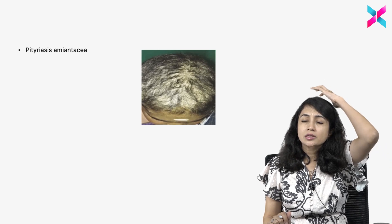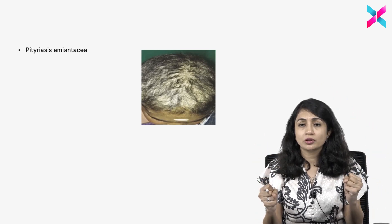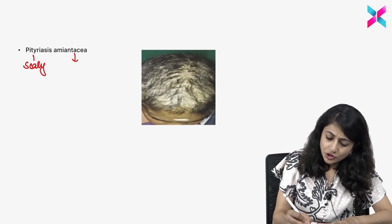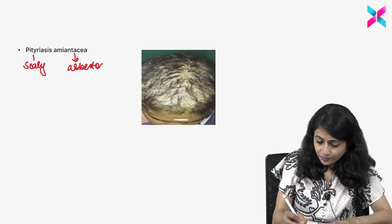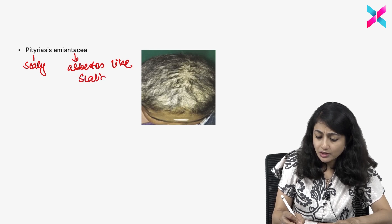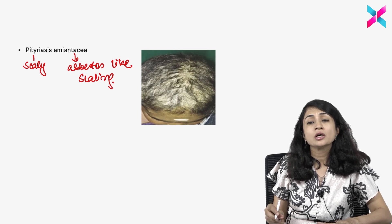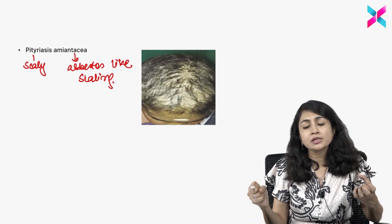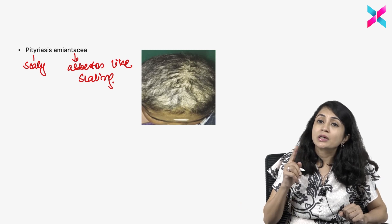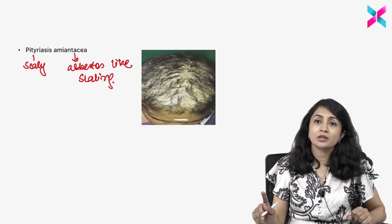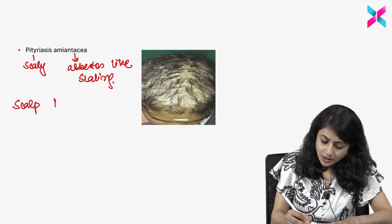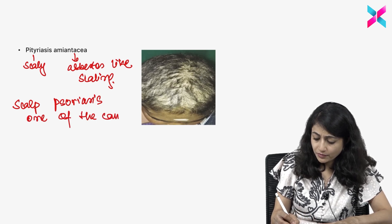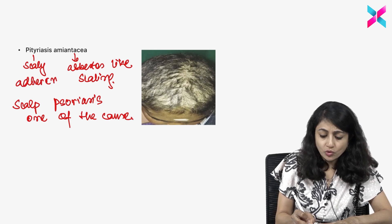Sometimes the scales on the scalp will be really adherent to each other. In this case, we call it pityriasis amiantacea. 'Pityriasis' means scaly, and 'amiantacea' means thick asbestos-like scaling, where there is heaped-up scale present. Remember, pityriasis amiantacea is not another term for scalp psoriasis — it can be seen in other disorders also where you see persistent thickened deposition of scales on the scalp. But scalp psoriasis is one of the causes of pityriasis amiantacea, where you see very adherent scaling on the scalp.